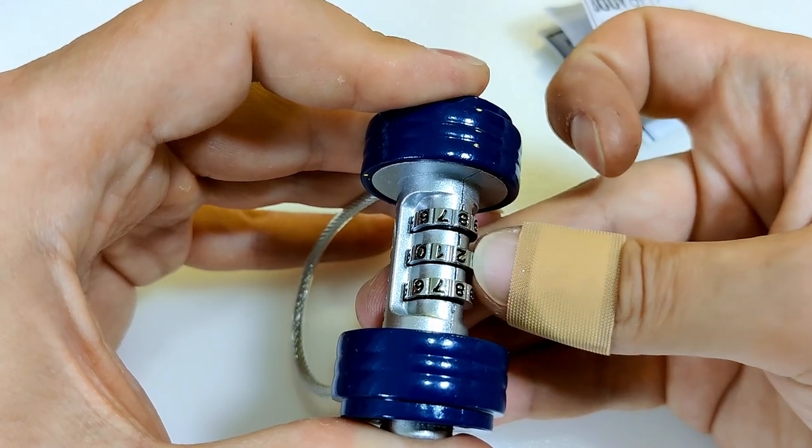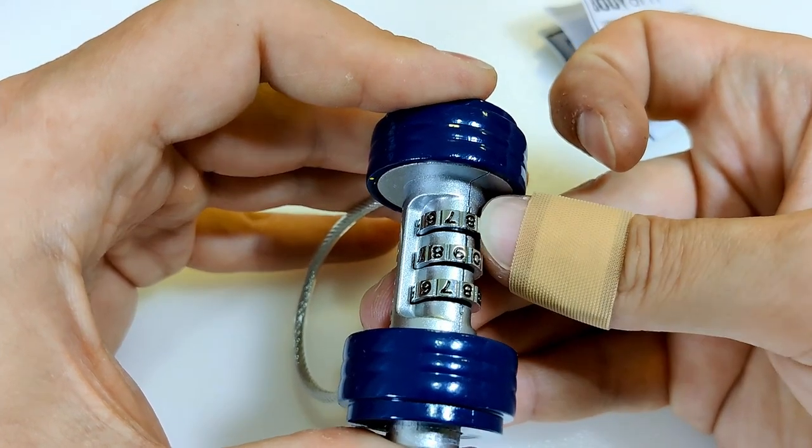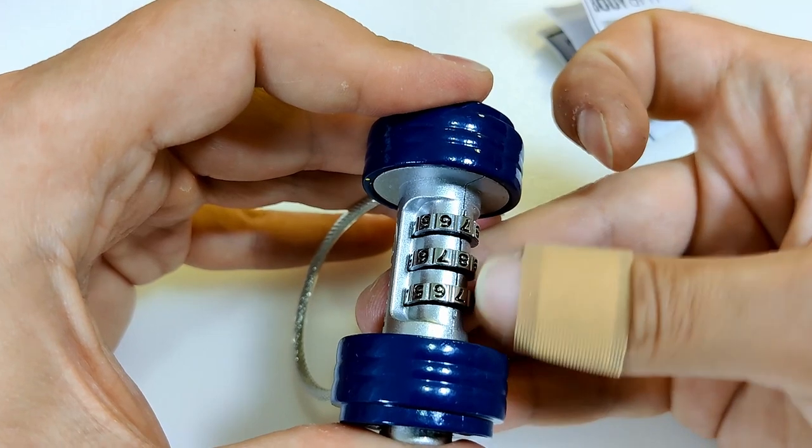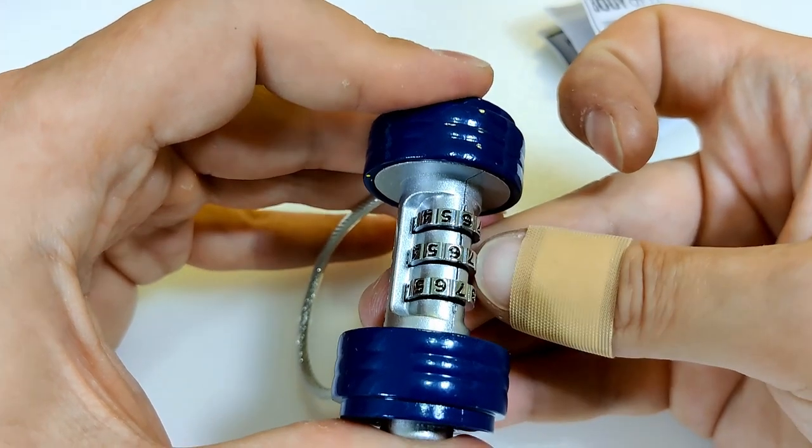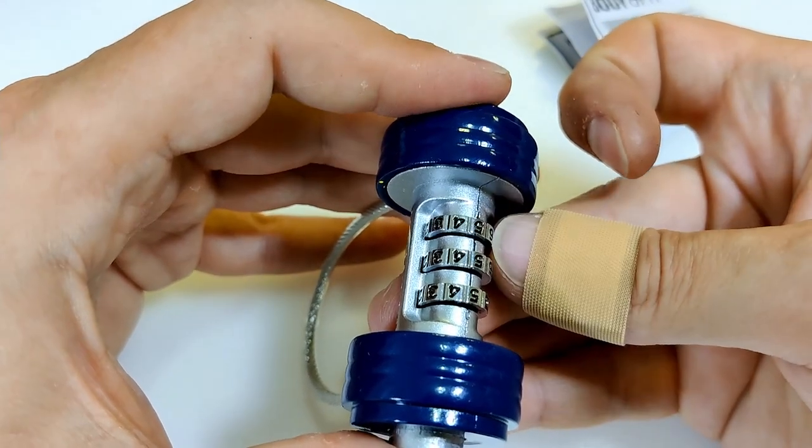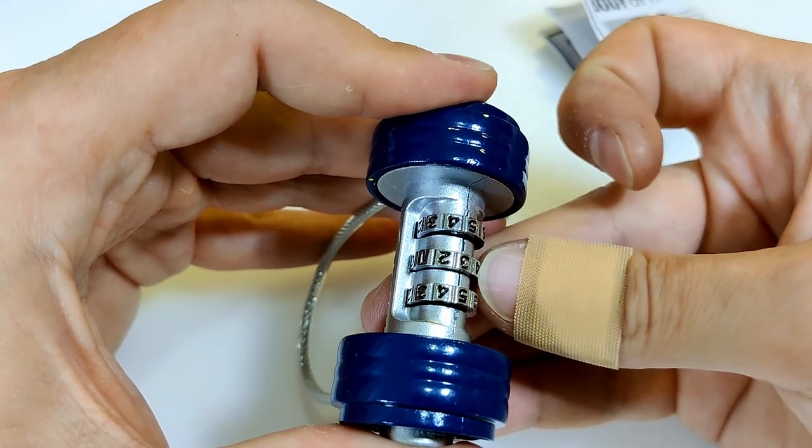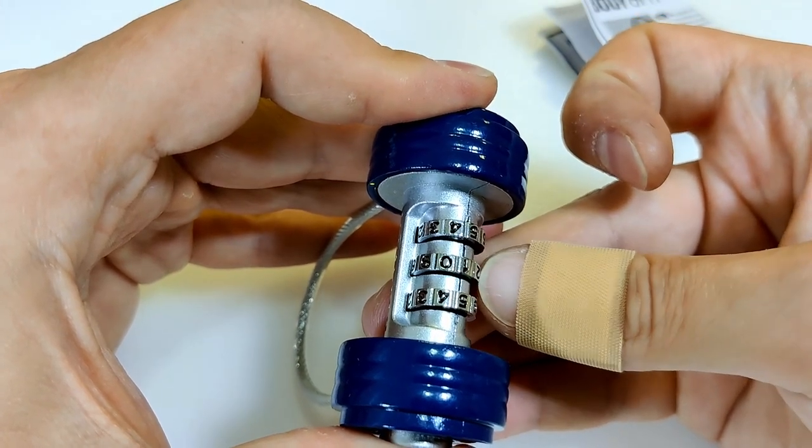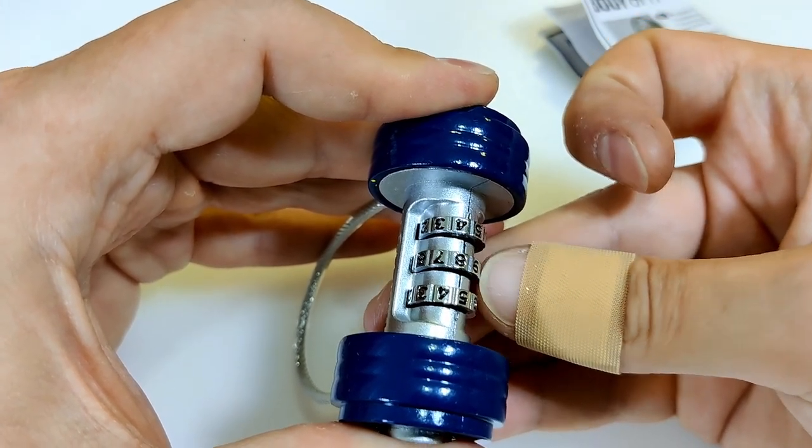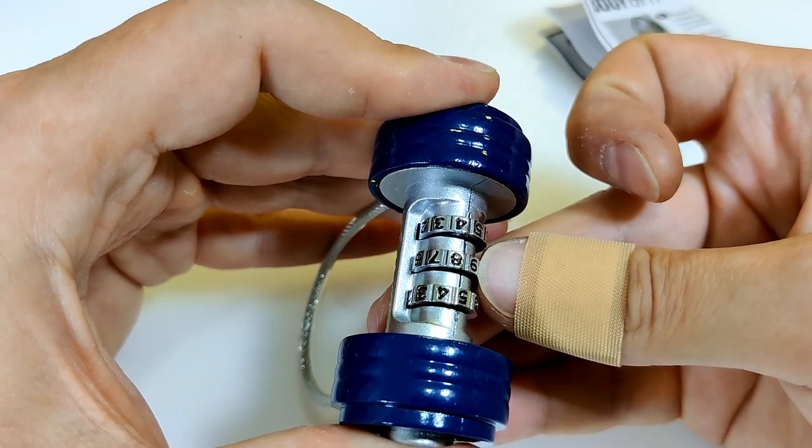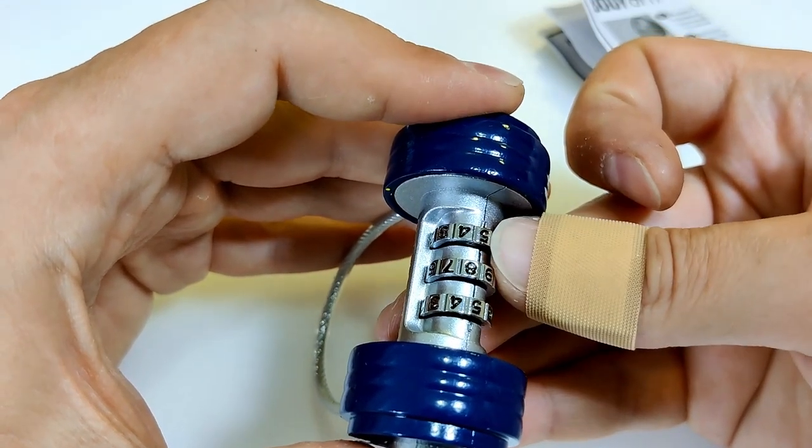So we turn one number and try to feel if something's going to turn easy or not. I'm going one by one trying to figure out which wheel it is.